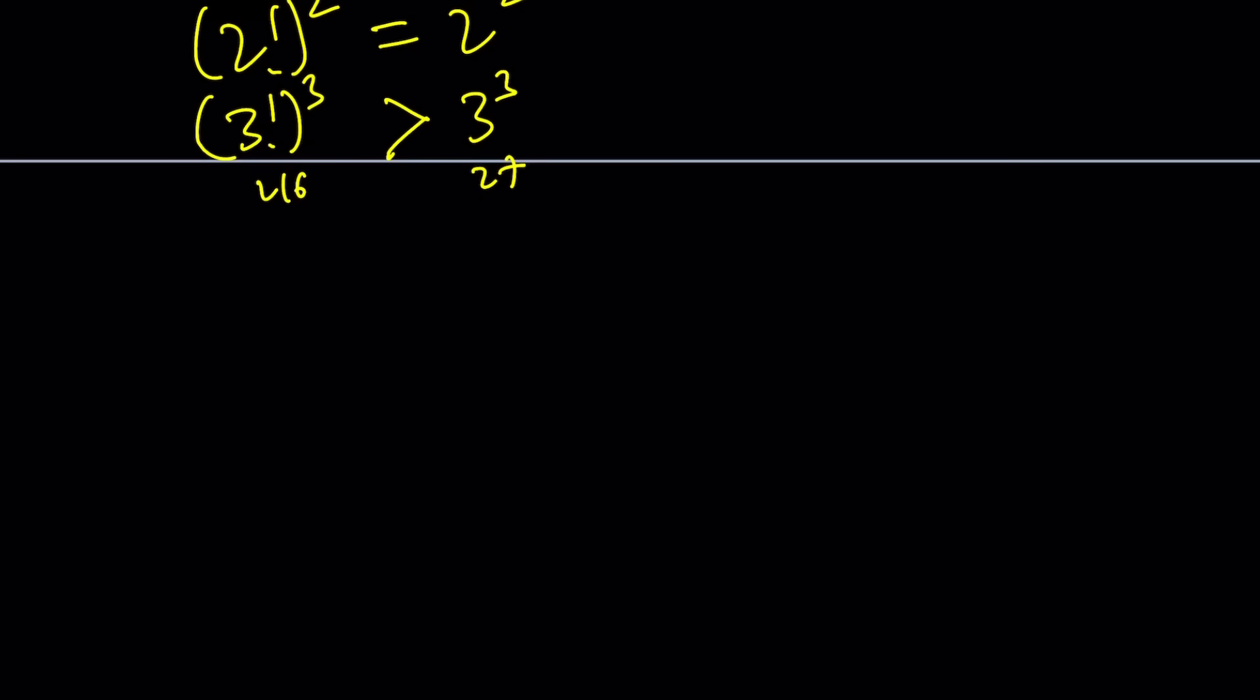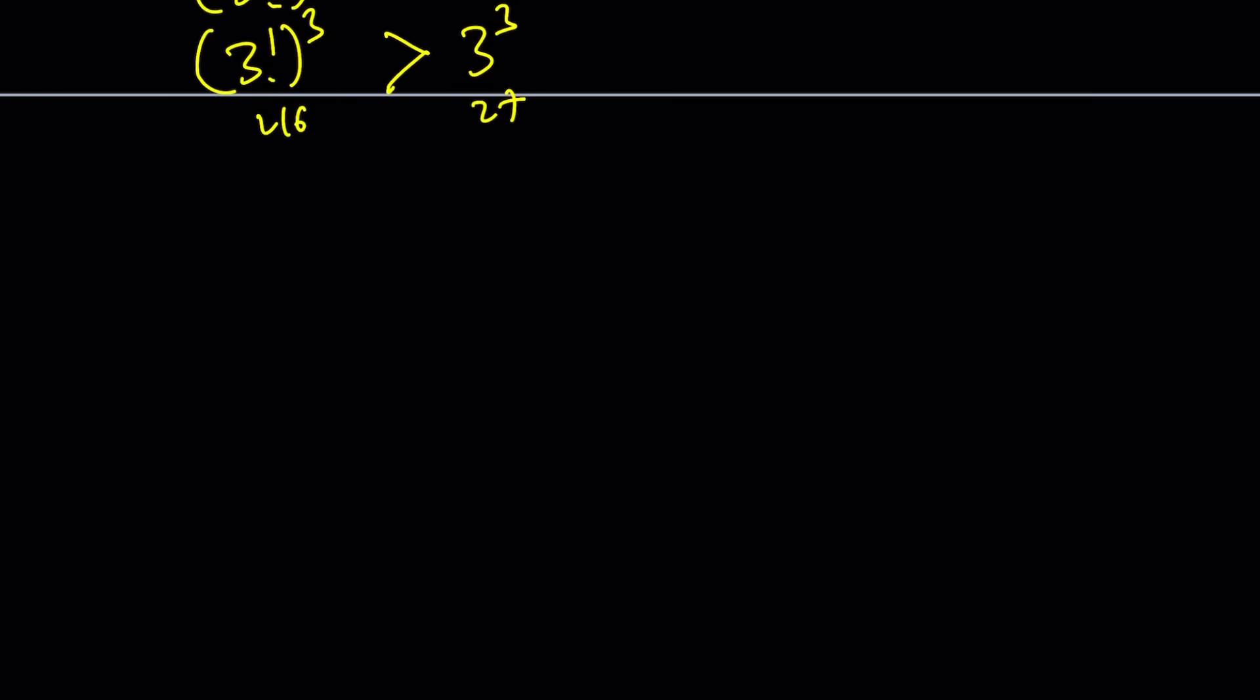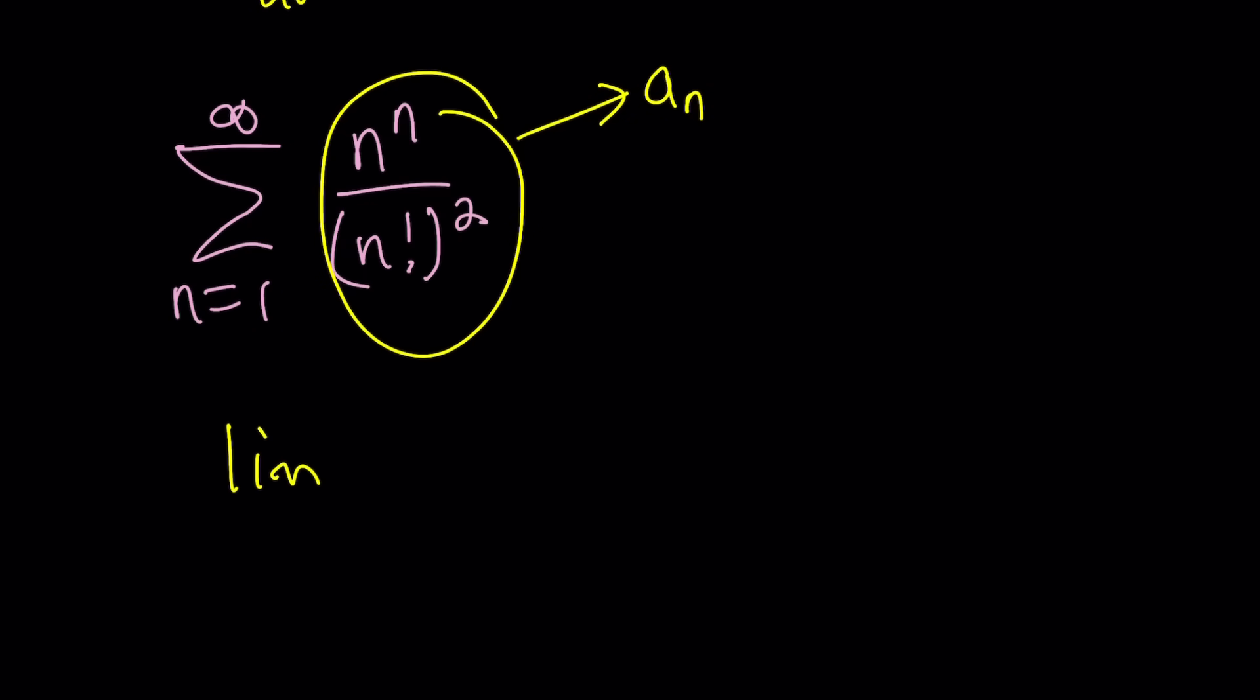What would happen if I divided, instead of comparing them like this, if I divided n to the power n by n factorial squared? Of course, you know that the bottom one is larger. And then kind of make a series out of this and add n equals 1 through infinity. Would this diverge or converge? And we can actually find out by using what is called ratio test. And ratio test basically tells us the following. You take the limit as n approaches infinity of a n plus 1 over a n, and take the absolute value. If this limit is less than 1, then we have a convergent series. If it's greater than 1, it's divergent. If it's 1, inconclusive. Too bad. You have to use another test.